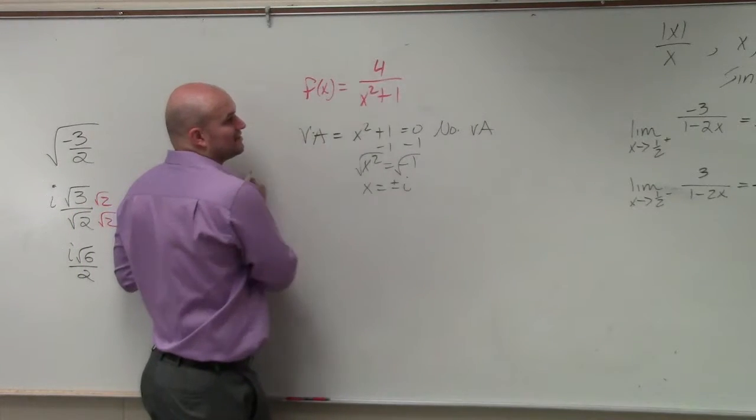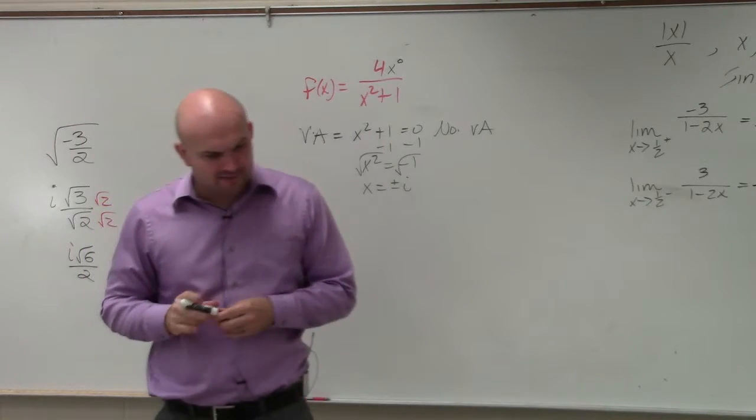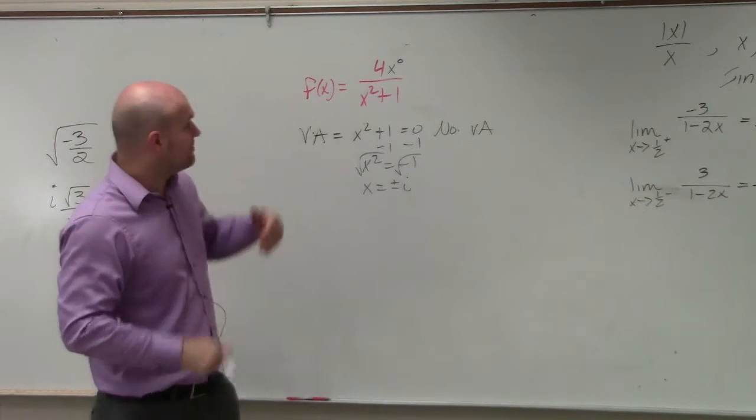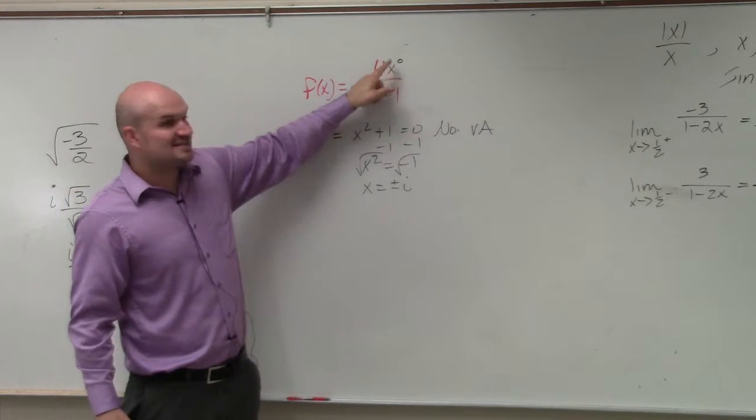The next thing is we need to look at the horizontal asymptote test. This is why I kind of chose these examples. We identify the degrees since x to the 0 is always 1.